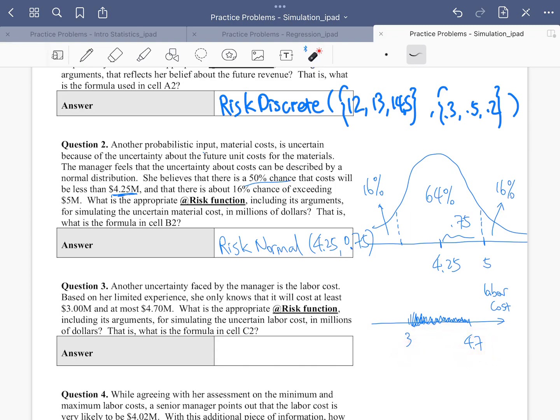As far as the probability is concerned, we don't know. Is it going to be more likely to be $4.7 million or $3 million or somewhere in the middle? We don't know anything about that. We may have very limited information like this particular situation, which assumes that anywhere between $3 million and $4.7 million is going to be equally likely.